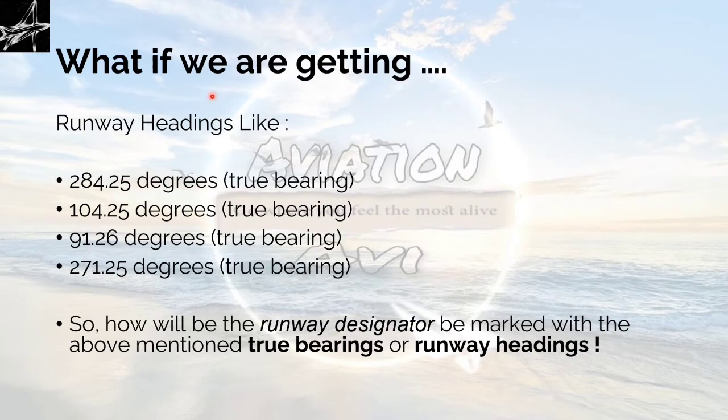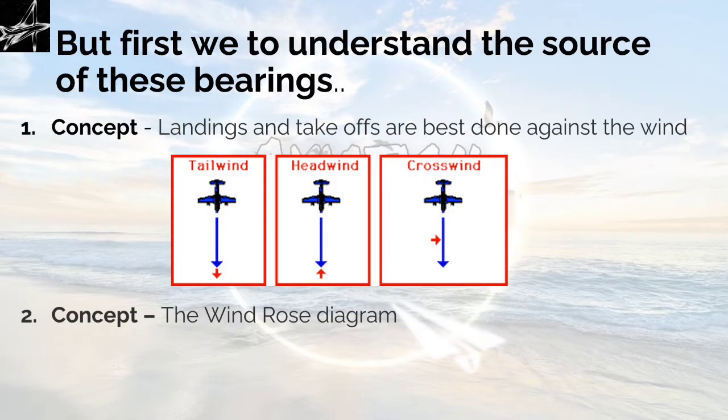We have already done simple calculations in the first part. What if we are getting runway headings like 284.25 degrees, 104.25 degrees, 91.26 degrees, 271.25 degrees? How will the runway designator be marked with the above mentioned bearings or runway headings? Because if we take 1 tenth of it, it will again come as something in decimals. But it is written that a runway designator is a 2 digit number. So we have to mention only 2 digits on a runway. We will learn this in the next part.